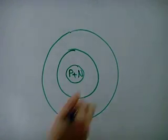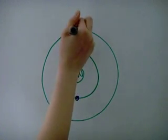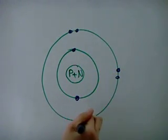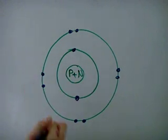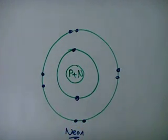Protons and neutrons are found in the nucleus, and the electrons are in different energy levels, also known as electron shells. And this is the atom neon.